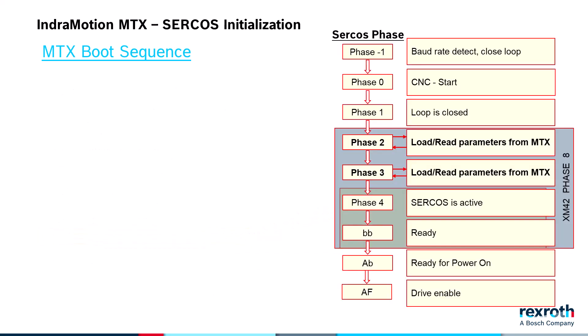This diagram shows the relationship between the drives phasing up and the MTX boot sequence. As you can see, in phase 8 of the MTX boot sequence, the control will read and write parameters in phase 2 and phase 3, and will exit phase 8 when CIRCOS reaches phase 4.